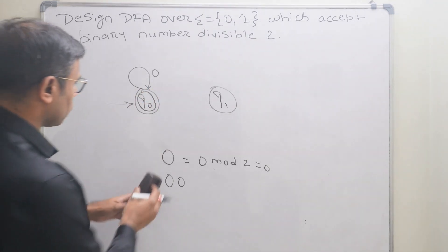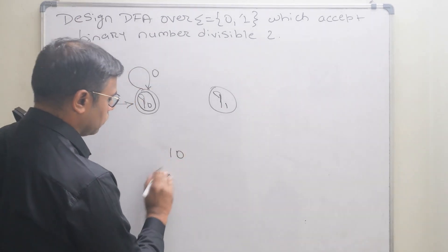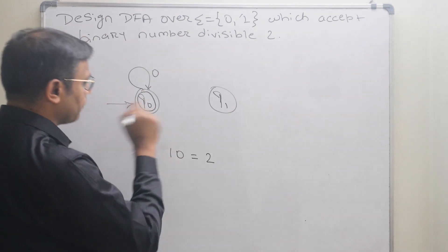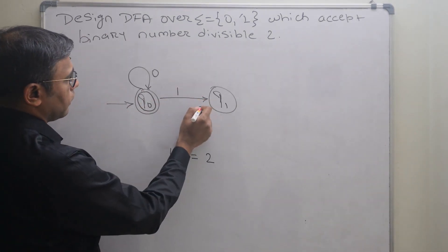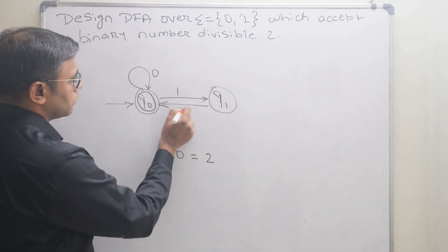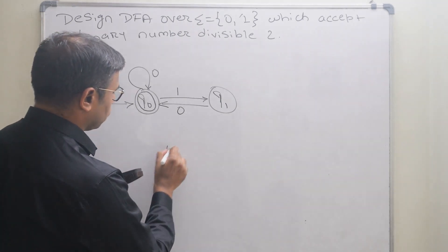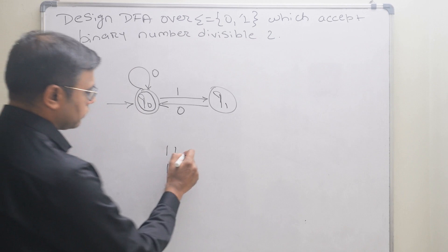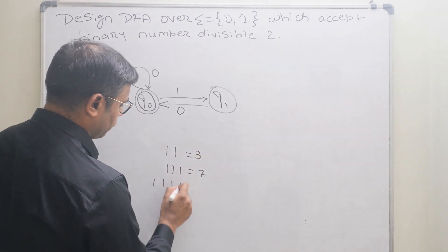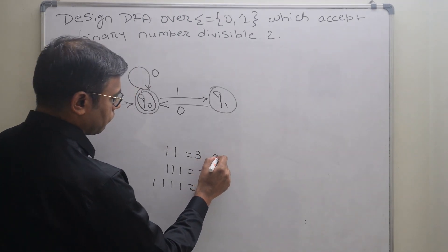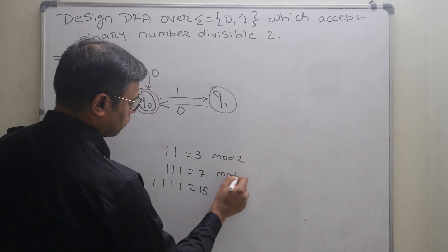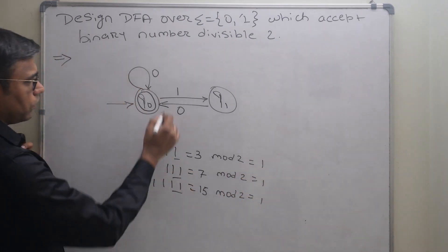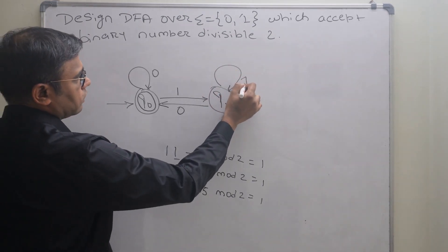Next, if we take the value 10, which in decimal is 2, we go from q0 on input 1 to q1, and then on input 0 we come back to q0, which is the final state. Then for input 1, 1 mod 2 is 1, so we go to q1. For 11 which is 3, 111 which is 7, and 1111 which is 15, performing mod 2 always gives remainder 1. So any number of 1s keeps us in q1, and we apply a self-loop on q1.